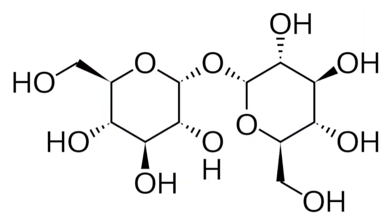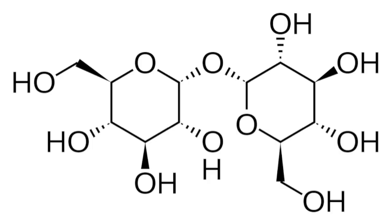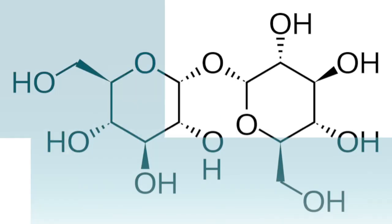So what is trehalose? Chemically, it's two glucose molecules linked by a glucoside bond. It's the primary blood sugar in flying insects like bees, which is fun to discuss at cocktail parties. Trehalose is not calorie free and it's a bit sweet, but it's mostly a stabilizing agent used in all sorts of processed foods and products — toothpaste, ice cream, breads, hand lotion, gum.